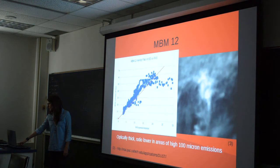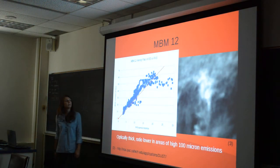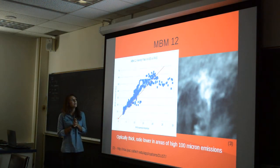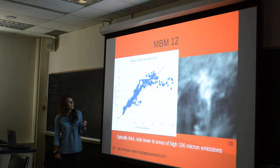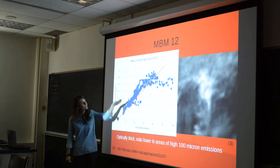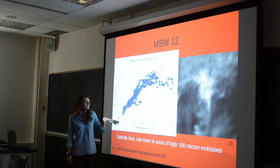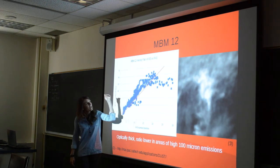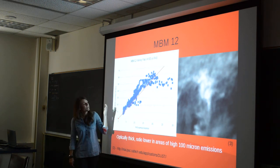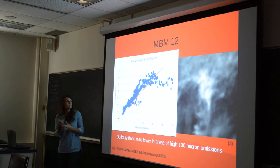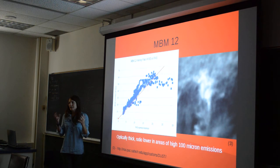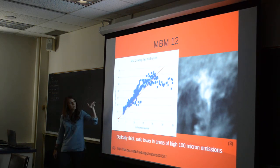We moved on to looking at optically thick clouds. This is NBM 12, a high-latitude cloud. The ratio is pretty much in line with expected — a little bit higher — until the large grain emissions reach about 12. Then the slope rolls out; the PAHs stop increasing. That's because of the skin effect: UV radiation is being absorbed by the larger grains on the outside and can't get inside the cloud, so it just levels out at that point.